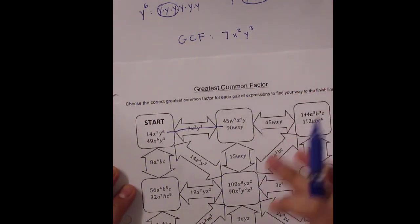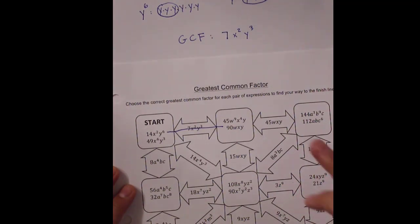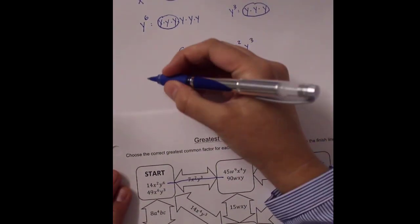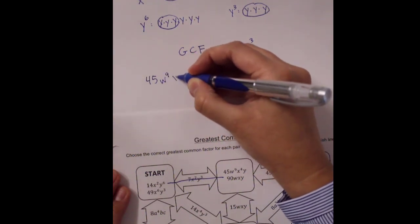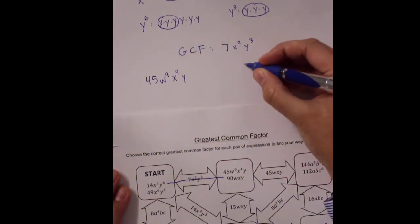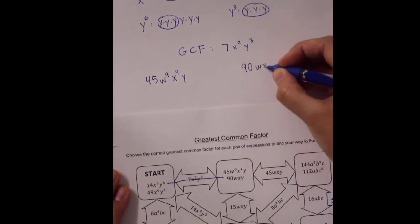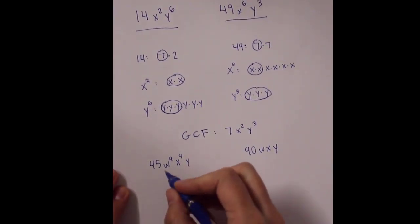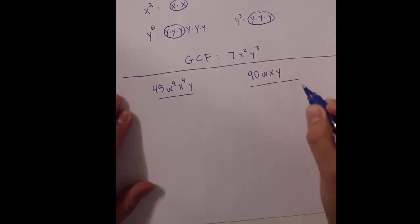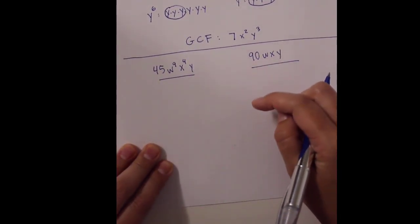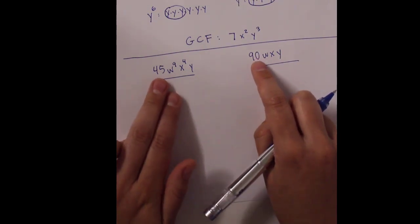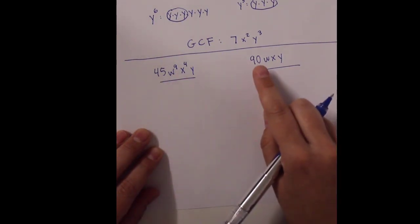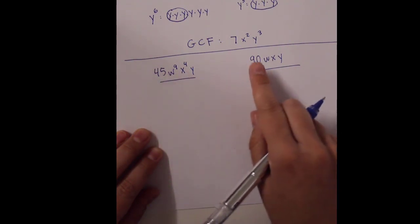Let's do the next one. We have 45w⁹x⁴y and 90wxy. Starting with the coefficients 45 and 90 — if you don't know their greatest common factor, you break the numbers down. Actually, 45 goes into 90, so that's going to be our greatest common factor for the coefficient. But let's say I didn't know that, so I'll use a factor tree.